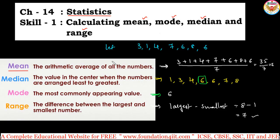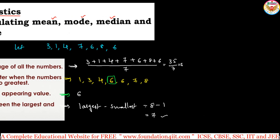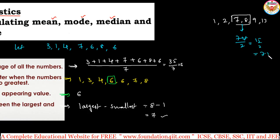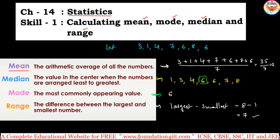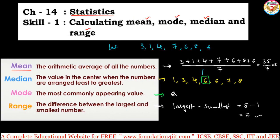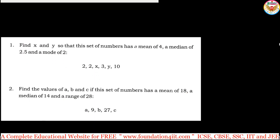To summarize: mean is the average, median is the mid value after arranging in ascending or descending order. If the number of observations is even, you get two numbers in the center — take their average. For example, with numbers 1, 2, 7, 8, 9, 13, the two middle values are 7 and 8. Their average is 7 + 8 divided by 2, which is 7.5. If the number of observations is odd, you get exactly one middle value.